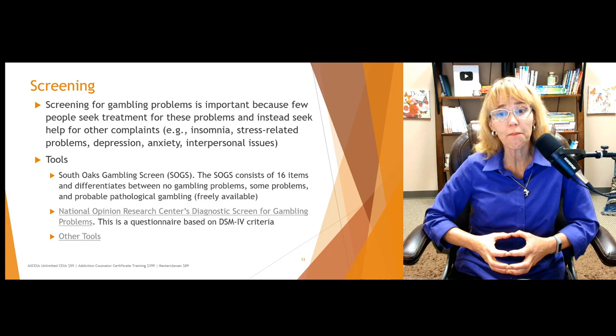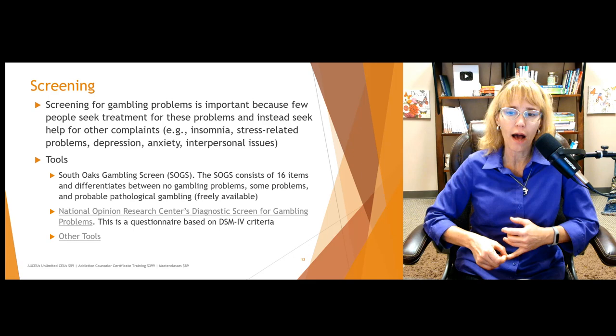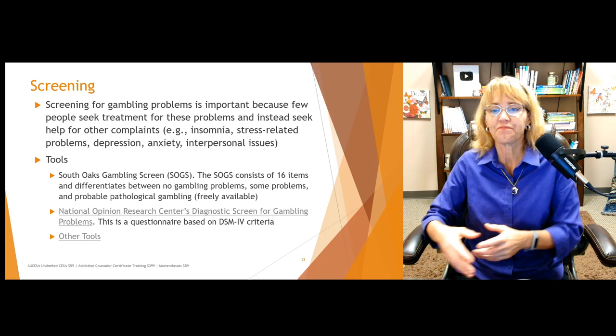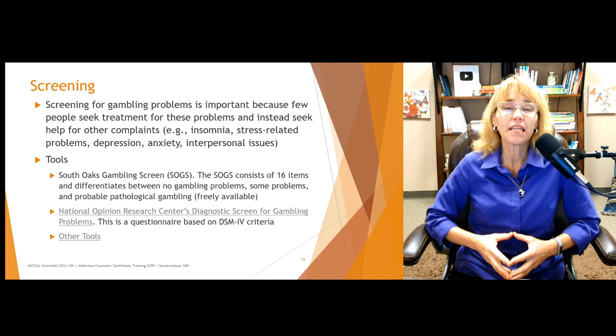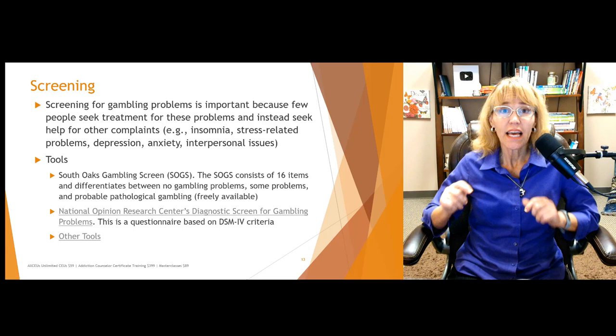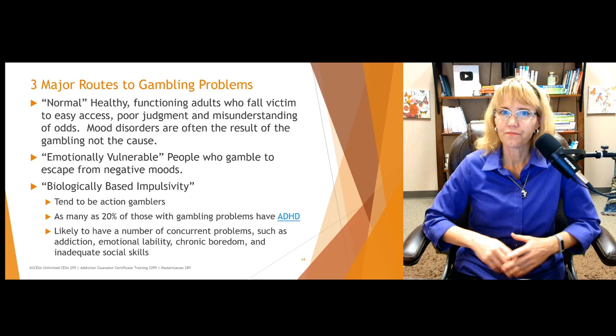Tools for screening include the South Oaks Gambling Screen, or SOGS, which has 16 items and differentiates between no gambling problems, some problems, or probable gambling disorder — and it's freely available online. The National Opinion Research Center's Diagnostic Screen for Gambling Problems is a questionnaire based on DSM-IV criteria; note the criteria didn't change much from DSM-IV to 5-TR, though it does say DSM-IV at the top. Other tools are also available and linked in the video notes and the downloadable PDF.